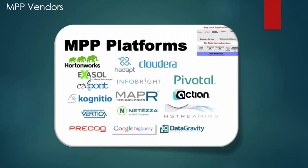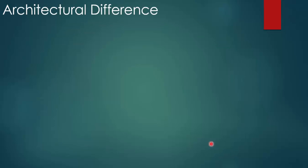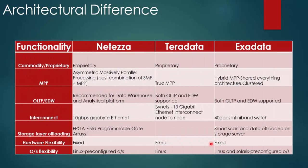Outside of Teradata and Exadata, there are other MPP vendors available in the market. A few are very well known and used by many organizations, namely HP Vertica, IBM Netezza, and others such as Hortonworks and ClouData. For an architectural comparison, we have picked three MPP solutions offered as data warehouse appliances from vendors: Exadata, Netezza, and Teradata.